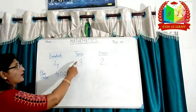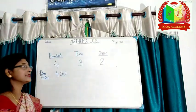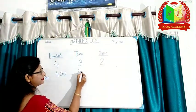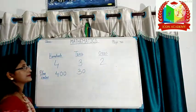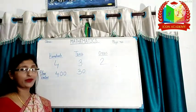Three is on tens place. So, place value of three is thirty. Two is on ones place. Place value of two is two.